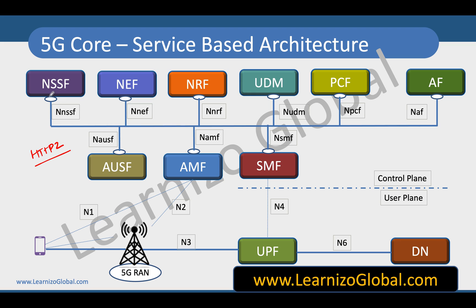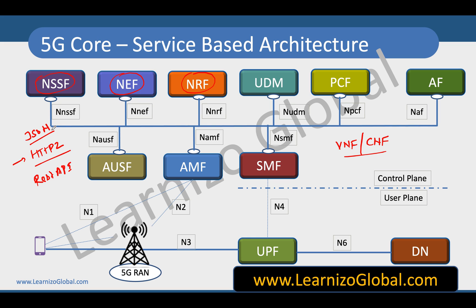All these network functions which are shown at multiple boxes here, they are typically not standalone hardware, but they are mostly running with some kind of virtual network functions or some cloud native network functions. How these VNFs or CNFs are going to communicate with each other? They are going to use some REST API kind of architecture by using HTTP2 methods. And on top of that, we will be using JSON for the serialization.